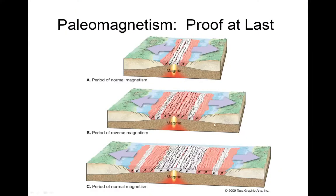In the last lesson, we learned about Harry Hess and his idea of seafloor spreading. That was a much better mechanism than Alfred Wegener had. But we still need proof. If we have a scientific theory, we can't just accept it without having evidence.